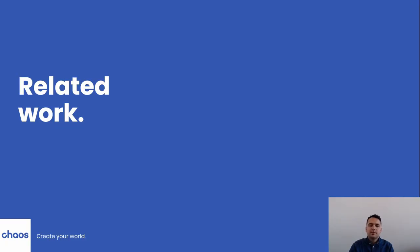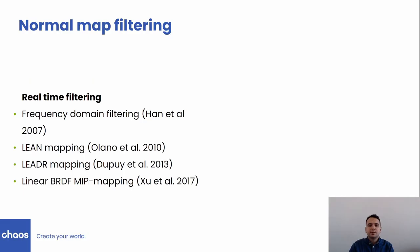There is a wide spectrum of existing normal map filtering approaches. Generally, they fall into two main categories. The first are the real-time filtering approaches like LEAN and LEADR mapping. They are production friendly and comparable to MIP mapping in terms of pre-computation, memory requirements, and performance. They produce artifact-free images; however, they are not accurate and blur out sub-pixel glints.